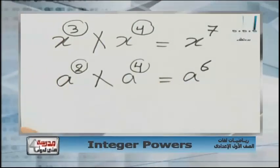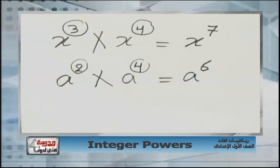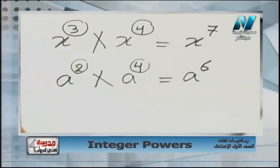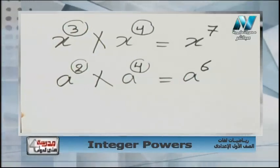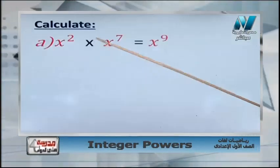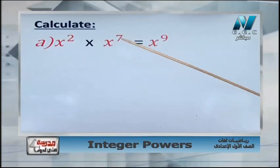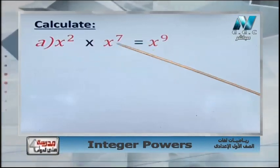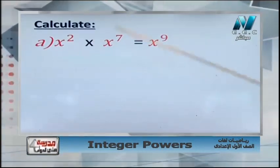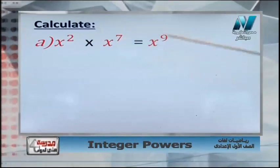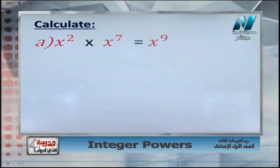Let's see our first example. Calculate: x power 2 times x power 7. Here we have same base, so we add the powers: 2 plus 7 equals 9. The answer is x power 9.